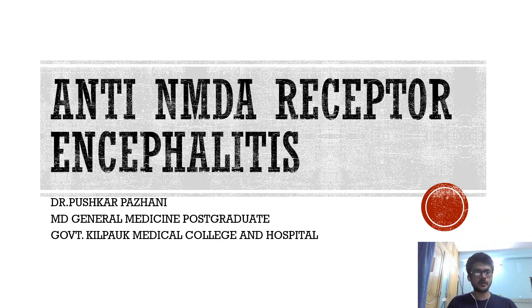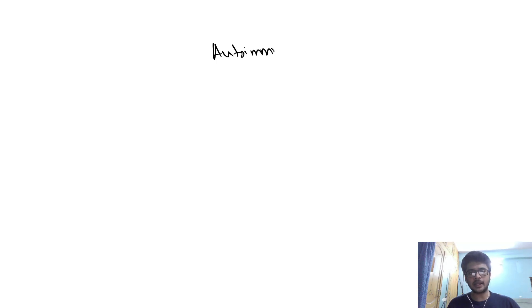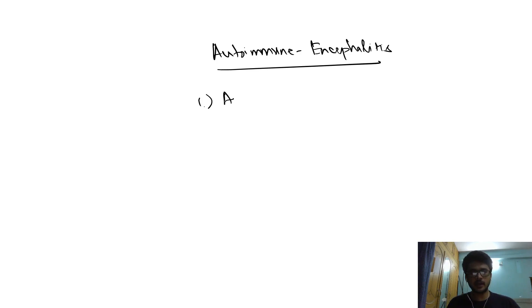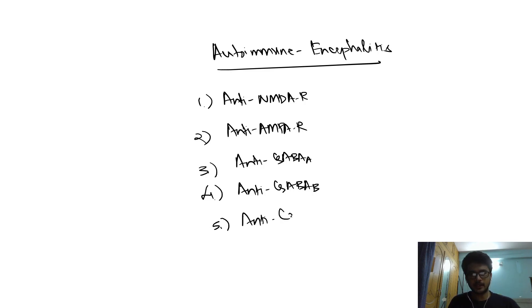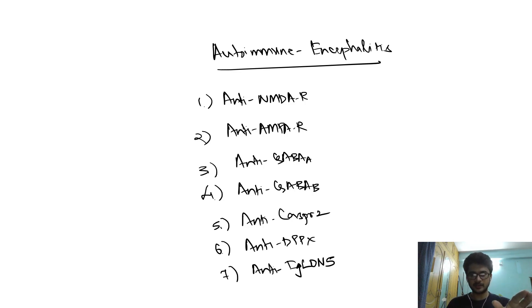Today's class is on anti-NMDA receptor encephalitis. Before going into the topic, we should know the important antibodies associated with autoimmune encephalitis: anti-NMDA receptor antibodies, anti-AMPA receptor antibodies, anti-GABA-A receptor antibodies, anti-GABA-B receptor antibodies, anti-CASPR2, anti-DPPX, and anti-IgLON5.